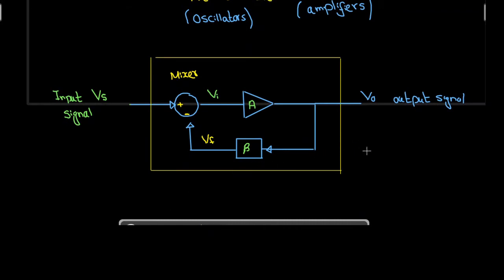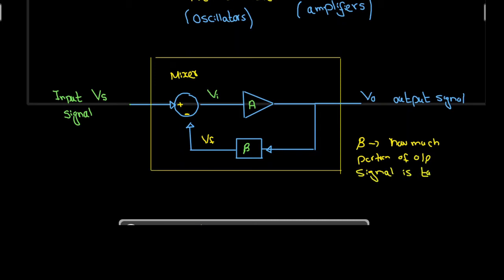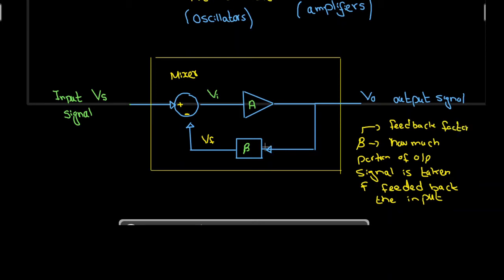The term beta denotes the feedback factor. It tells us how much portion of the output signal is taken and fed back to the input. So this is the definition of the feedback factor — it tells us how much portion of the output signal is taken and fed back to the input.